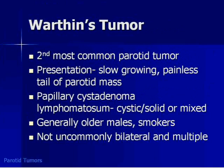The other entity on the differential is Warthen's tumor, the second most common parotid tumor. It too is slow-growing, but is generally seen — not always — in the tail of the parotid gland. This tumor is a papillary cystadenoma lymphomatosum, meaning it has papillary elements that secrete fluid. So these tumors can be solid, cystic, or combined cystic-solid. Unlike our original case with a non-smoking woman, Warthen's tumors are seen in older males and smokers — so that history should tip you off. Warthen's tumors are not uncommonly bilateral or multiple.